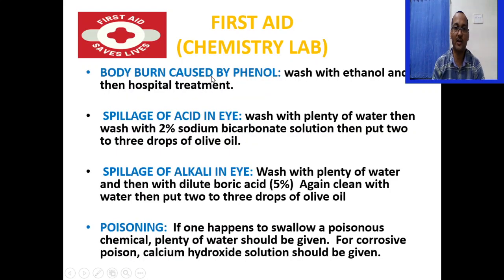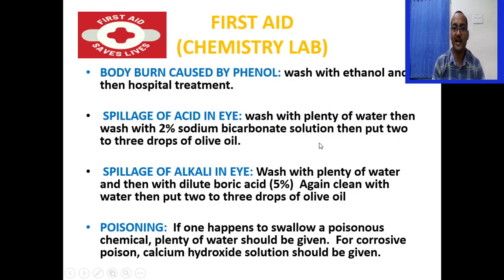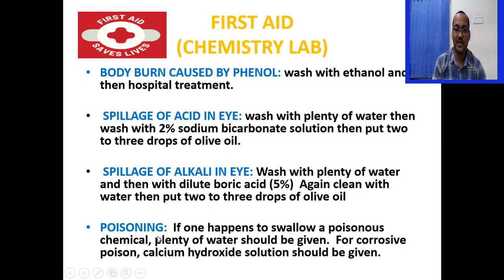If there is a body burn due to phenol spilling, wash it with ethanol first, then go for hospital treatment. If there is spillage of acid inside the eye, wash it with plenty of water, then with 2% sodium bicarbonate solution, then put 2 to 3 drops of olive oil. For alkaline spillage in the eye, wash with plenty of water, then with dilute 5% boric acid, clean again with water, and put 2 to 3 drops of olive oil. For chemical poisoning, if someone swallows poisonous chemicals, plenty of water should be given. For corrosive poison, calcium hydroxide solution should be given.